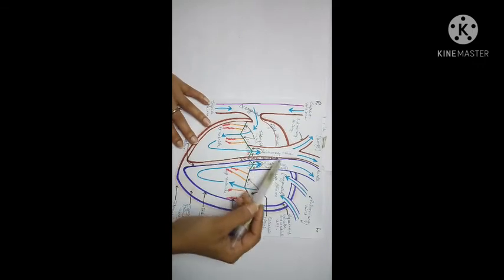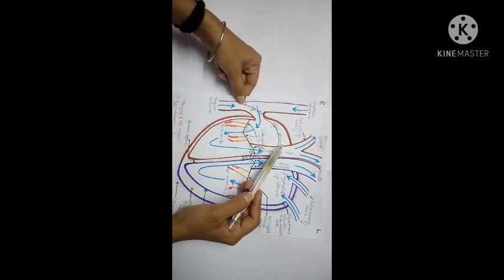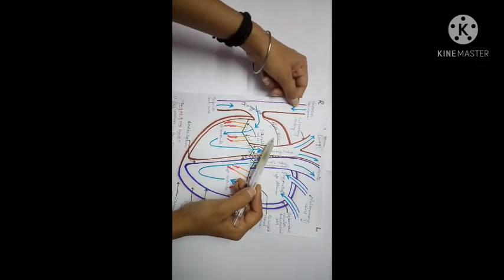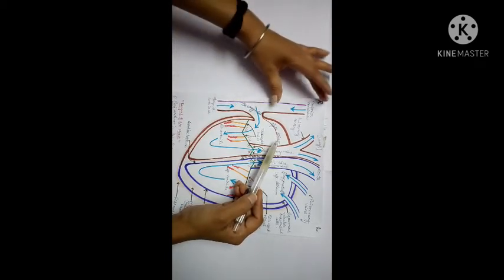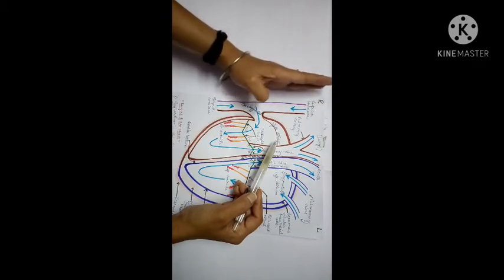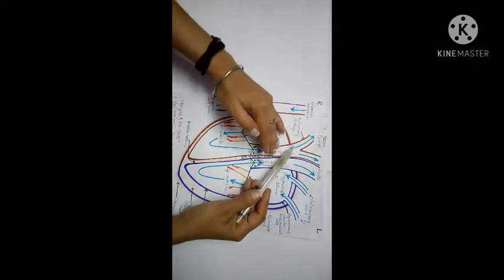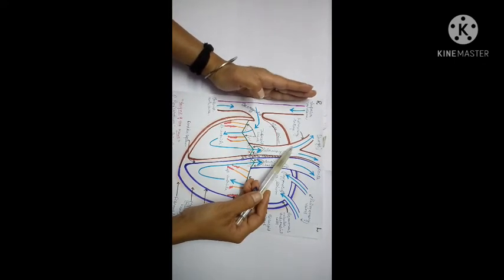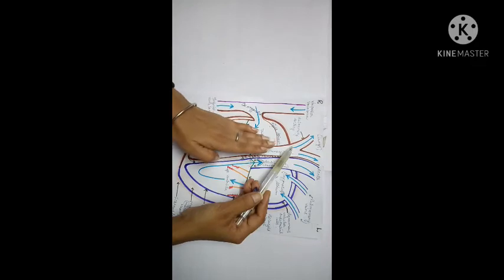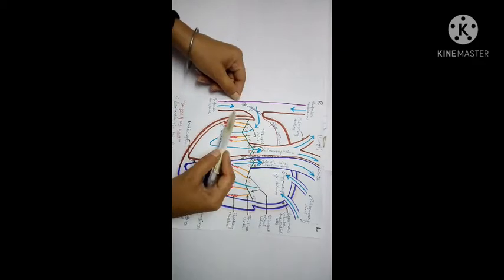Now let's talk about the right portion. As you can see here, this is the vena cava — the body's largest vein. The vena cava has two parts: the superior vena cava and the inferior vena cava. The superior vena cava collects impure blood from the upper portion of the body and sends it to the right atrium.